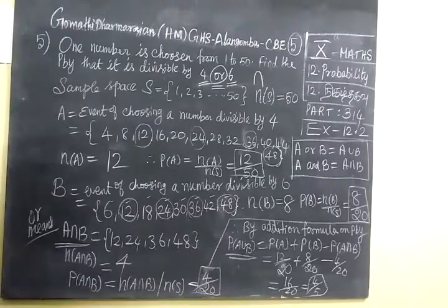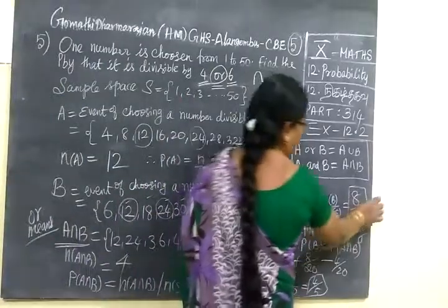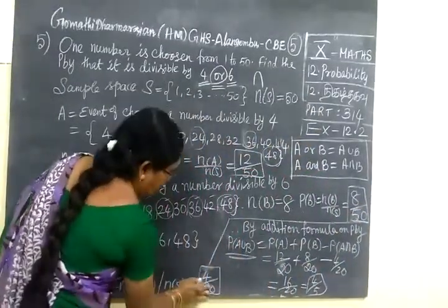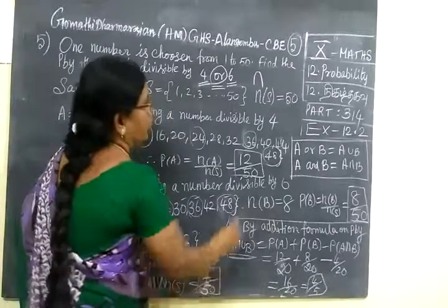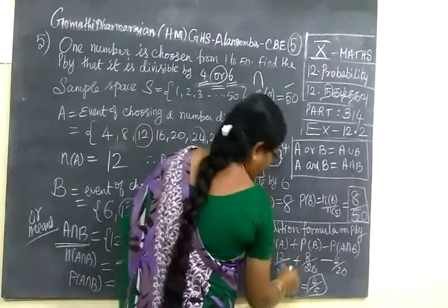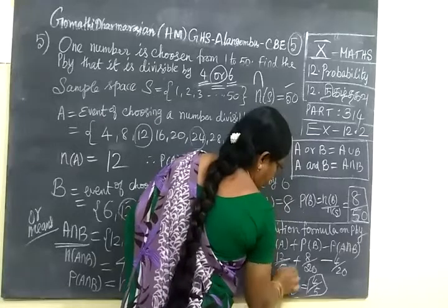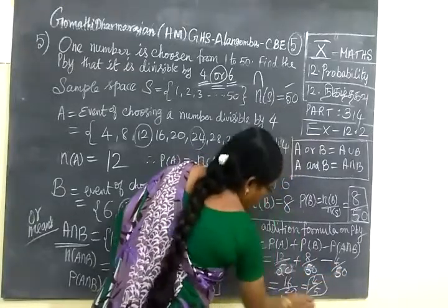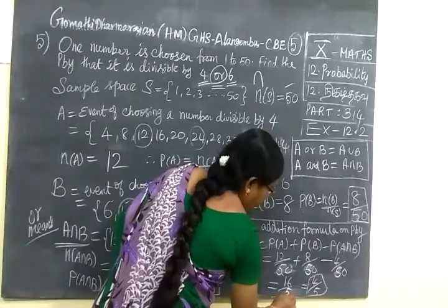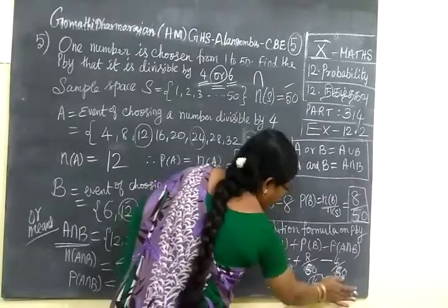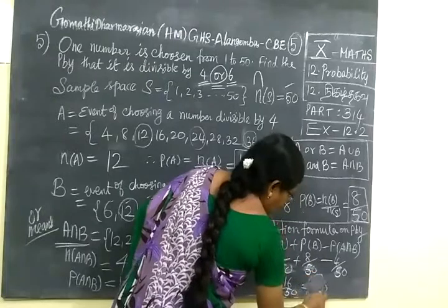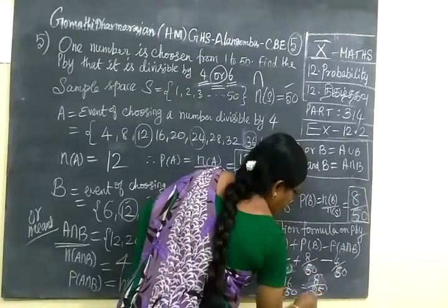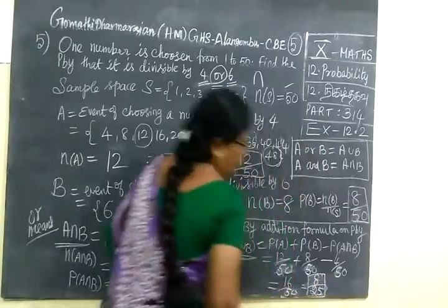Here N of S equal to 50. So you write 50 in the denominator. So if you cancel, you are getting the answer as 8 by 25.